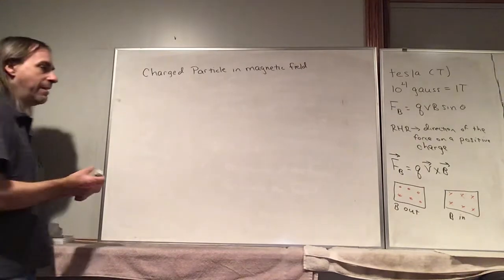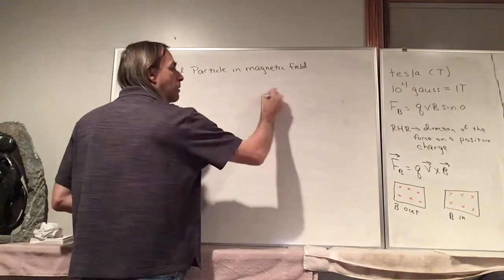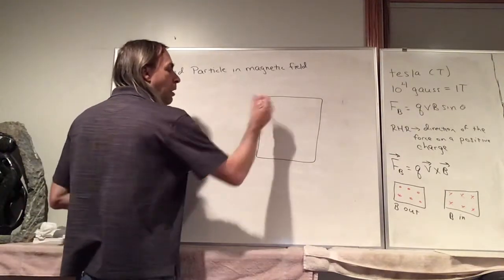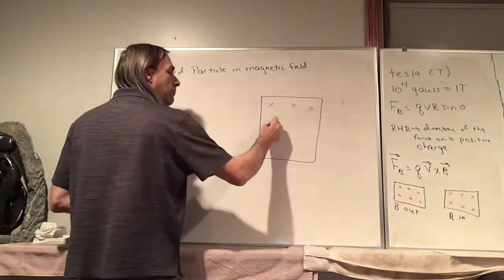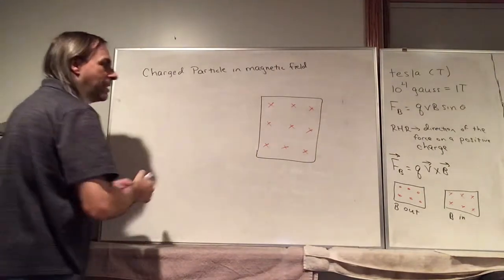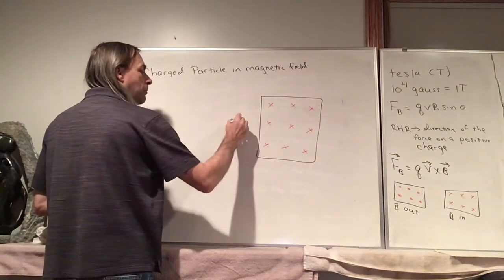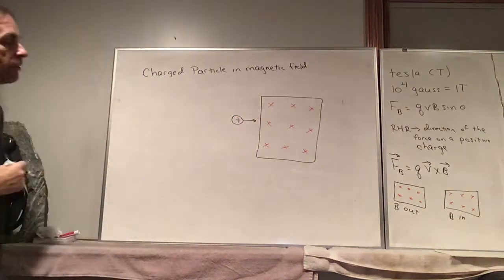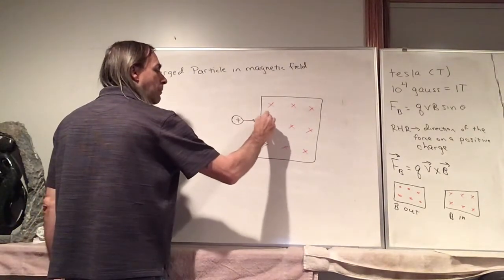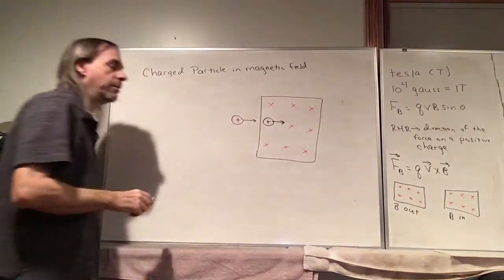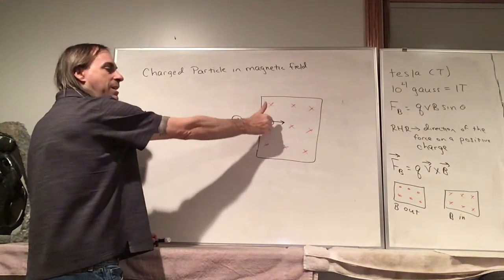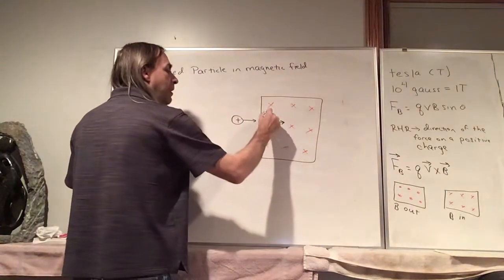Let's say we have a magnetic field going into the board — so there are X's here. We have a positive charged particle that's going to enter this region. Right when it enters, it's moving in a certain direction, and the magnetic field is into the board. Putting your fingers in the direction of velocity and curling toward the magnetic field, the magnetic force is upwards.